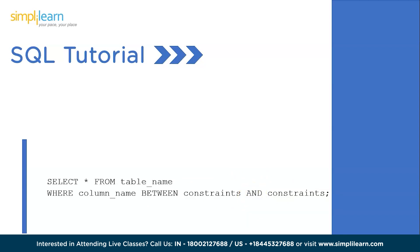For example, say your manager tells you to select all rows where the salary column is between 10,000 and 20,000. You would write: SELECT * FROM table_name WHERE salary BETWEEN 10000 AND 20000. That's how the BETWEEN command works. Now let's execute the same query practically and get back to the MySQL Workbench.